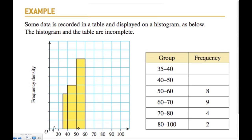Remembering that frequency density equals frequency divided by class width — this is continuous data — the frequency density for the 50-to-60 bar is 8 divided by 10, which is 0.8. So that mark on the axis must be 0.8. Looking at the scale, there are 8 dashes, so each dash must represent 0.1.